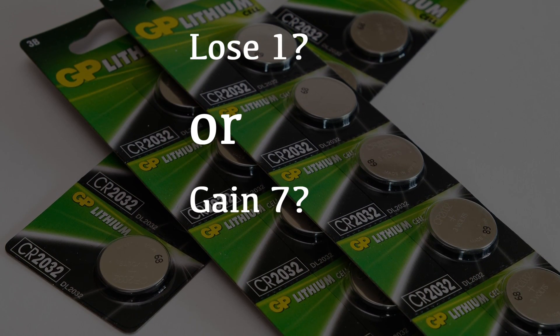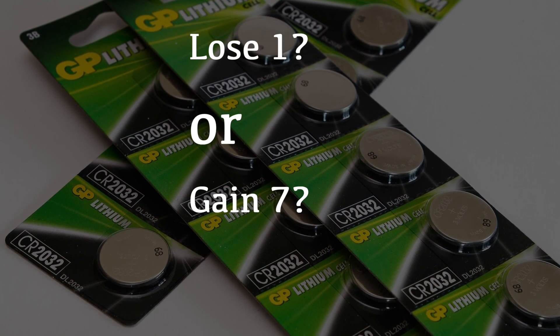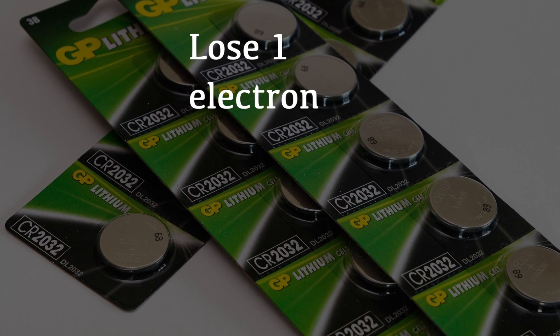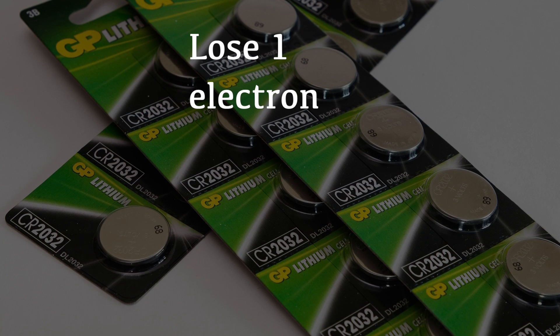That means a lithium atom has two options to become stable. It can lose one electron, leaving a full shell of two, or it can gain seven electrons. I think you'll agree that losing one is much easier than gaining seven.